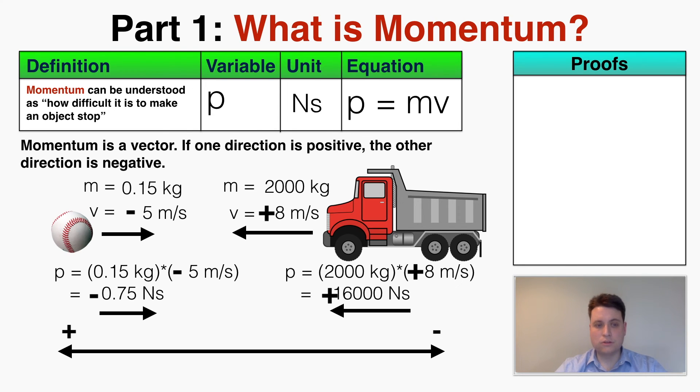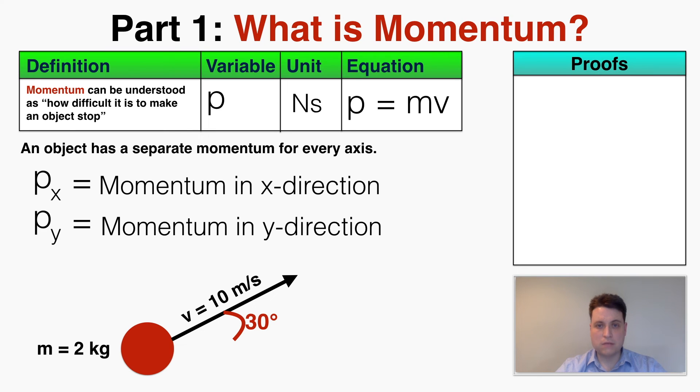Because momentum is a vector we can also describe an x-direction momentum and a y-direction momentum. If I have this 2 kilogram ball moving up at a velocity of 10 meters per second at an upward angle of 30 degrees.